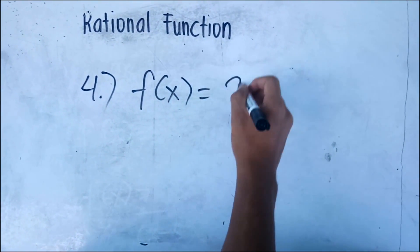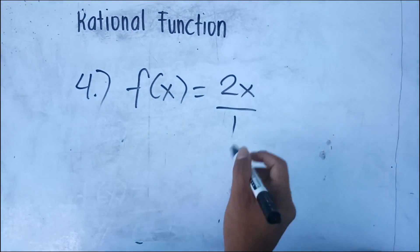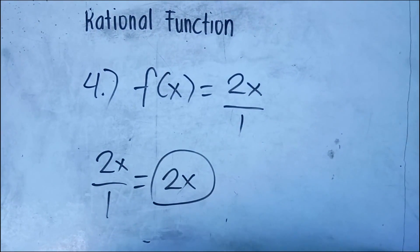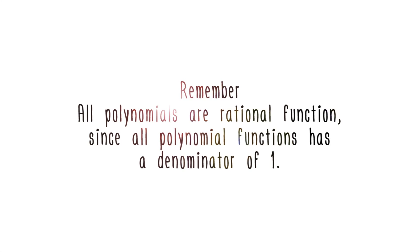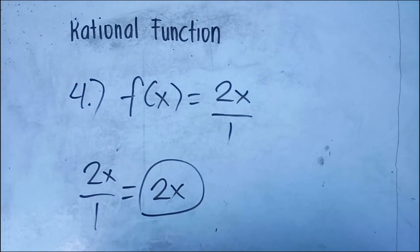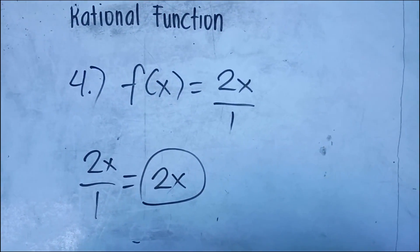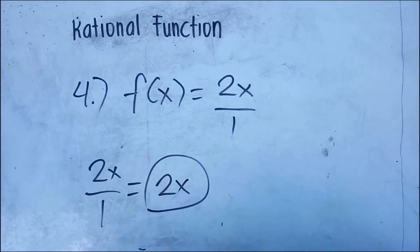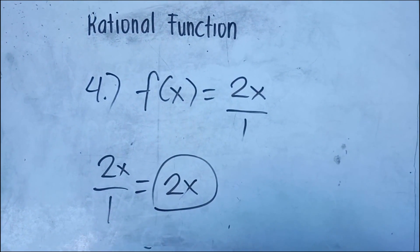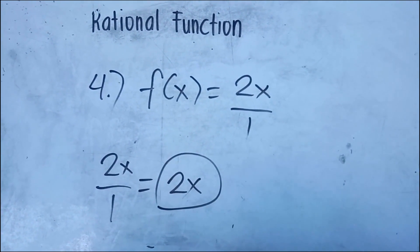Consider example number four: f of x equals two x over one. We know that two x over one is simply two x, which is a polynomial function. Remember that all polynomial functions are considered rational functions, since a polynomial function has a denominator equal to one, which is itself a polynomial — commonly called a monomial.